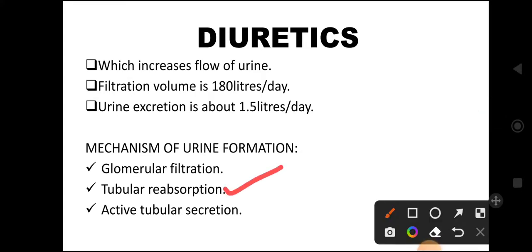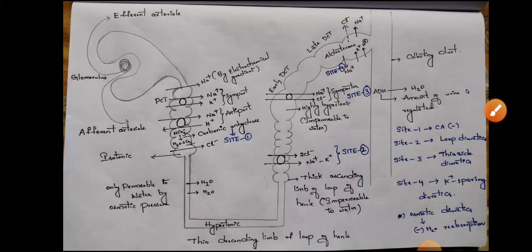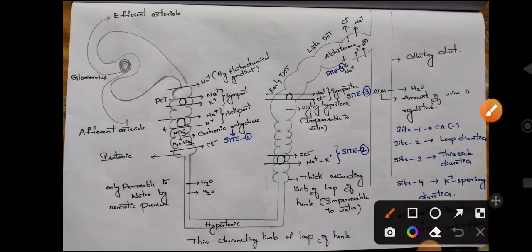Next, moving to tubular reabsorption — this is a somewhat lengthy process. Here, what happens in glomerular filtration stage 2 is that fluid enters the proximal convoluted tubule. This is where tubular reabsorption begins.